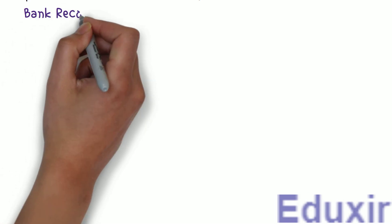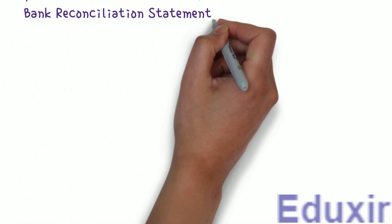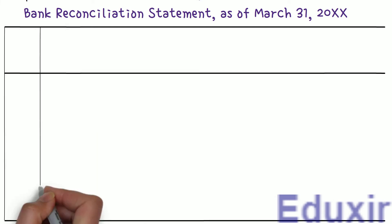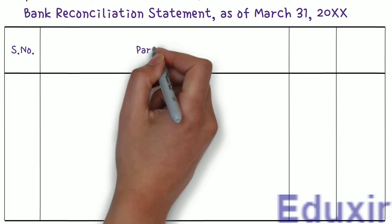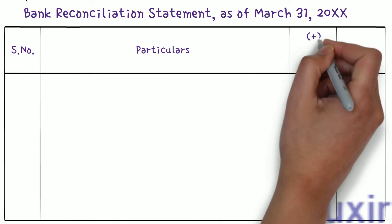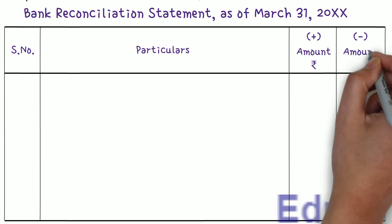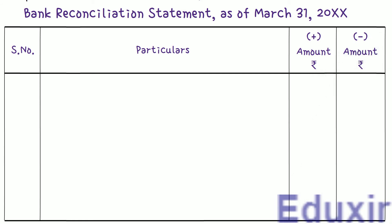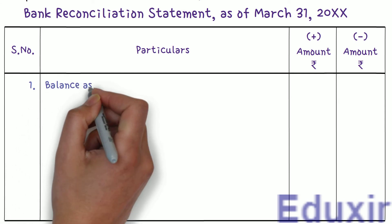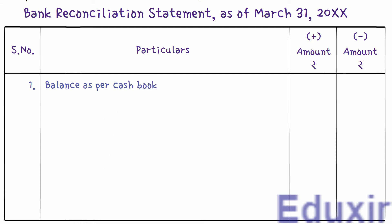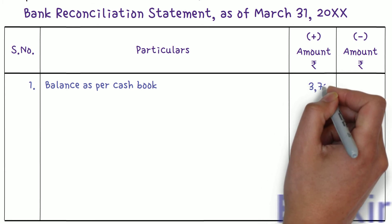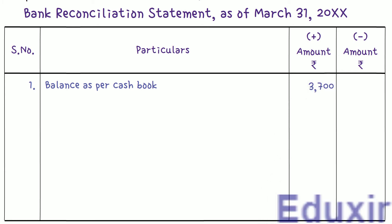Let us enter these details into the bank reconciliation statement. We write the title as Bank Reconciliation Statement as of March 31st, 2000+. The columns are: serial number, particulars, amount to be added, and amount to be deducted. For particulars number 1, we write 'balance as per the cashbook.' As this is a debit or favorable balance, we add this amount of 3700 rupees.